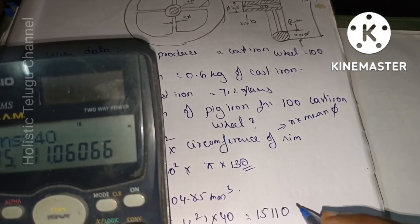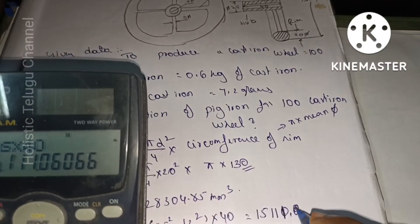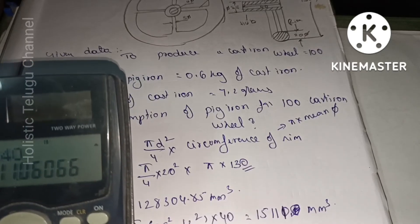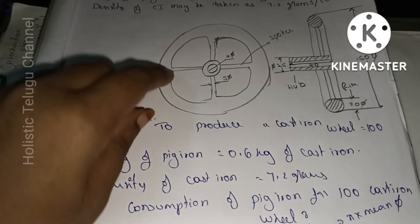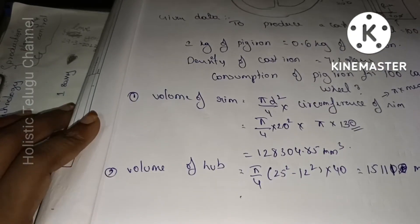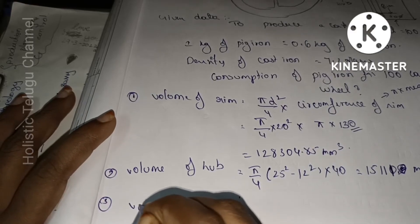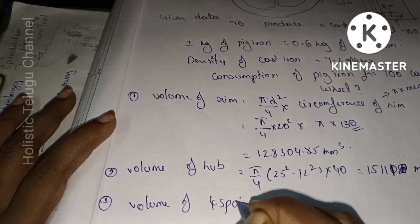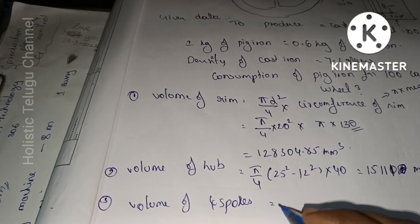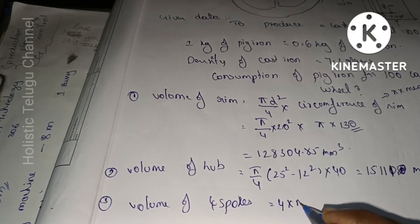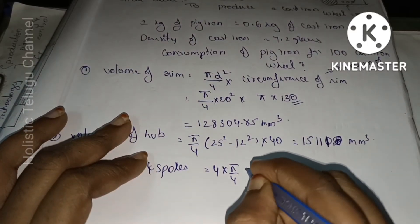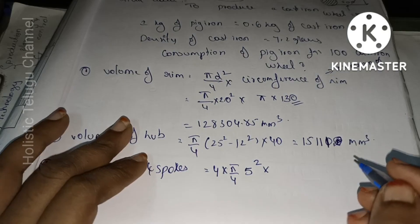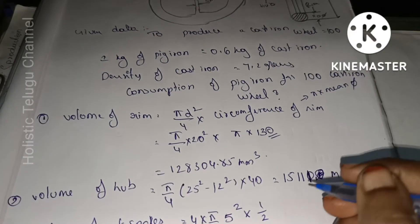Next we need the volume of 4 spokes. Value of 4 spokes = 4 × π/4 × d² × length. The diameter of each spoke is 5 mm. There are 4 spokes.